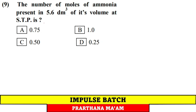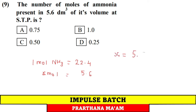Question 9: How many moles of ammonia are present in 5.6 dm³? 1 mole = 22.4 L, so moles = 5.6 / 22.4 = 0.25 moles. Option D.